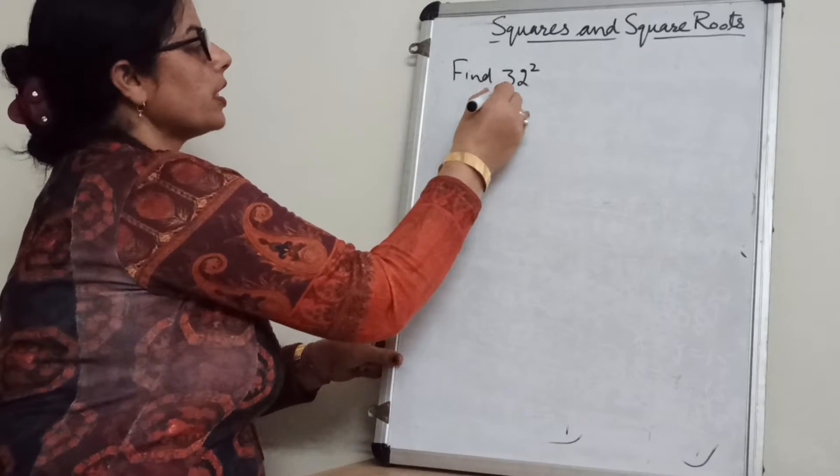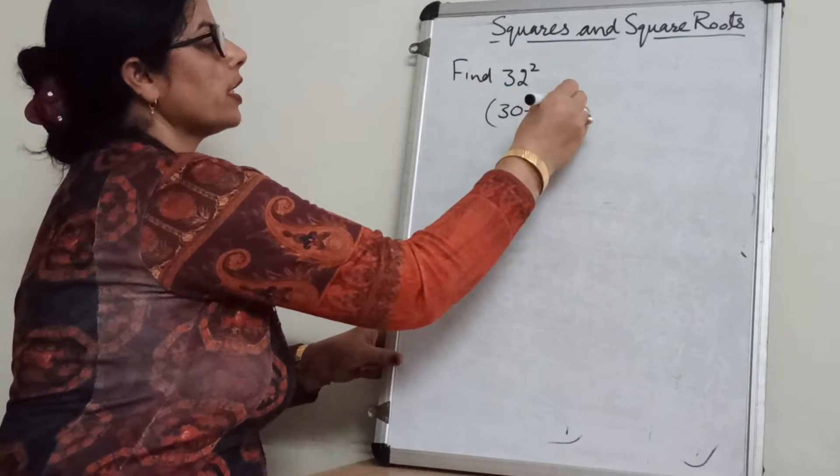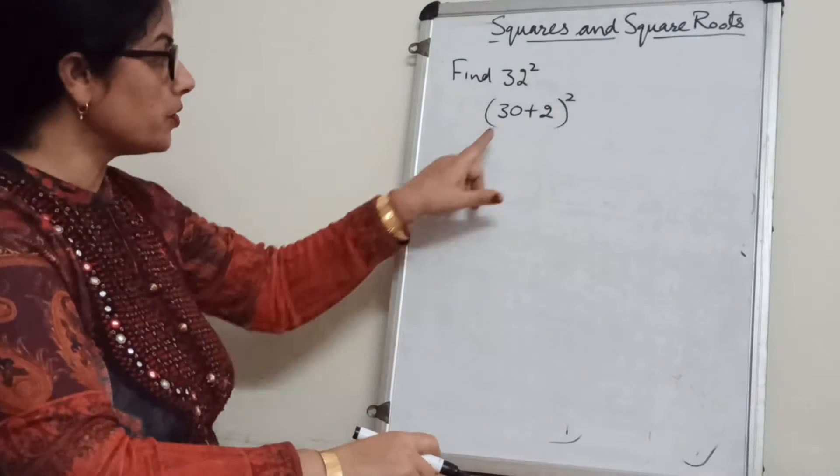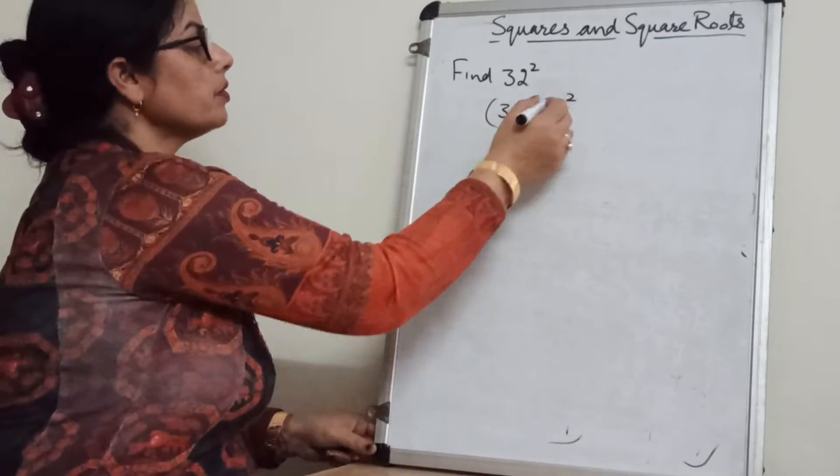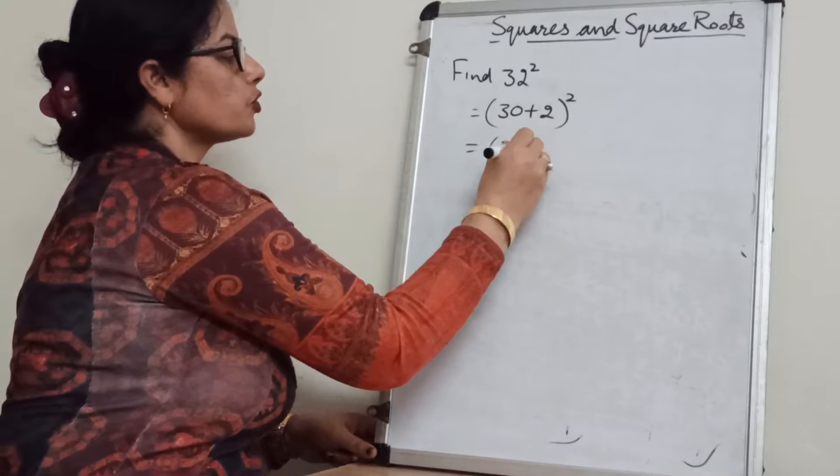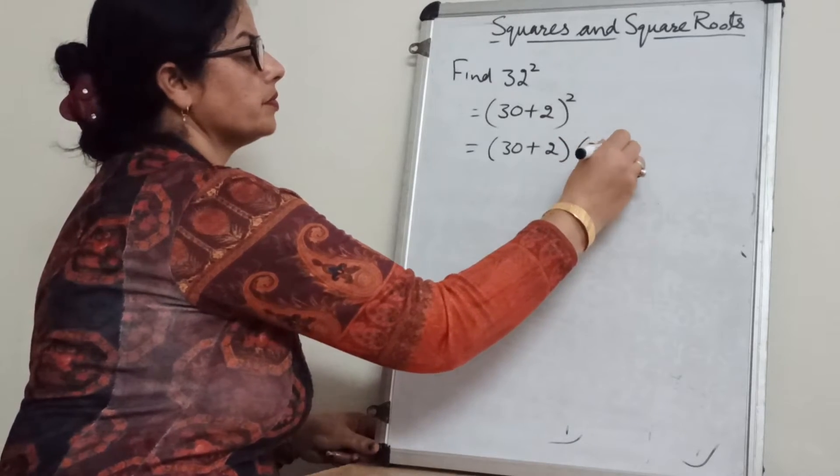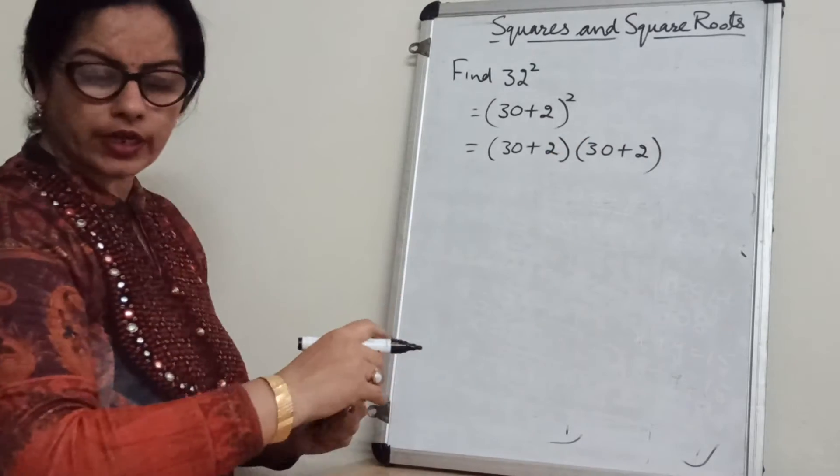First see we can write this 32 as 30 plus 2 whole square. We can break this 32 into terms. And now this is a square of binomial. We can write 30 plus 2 two times.